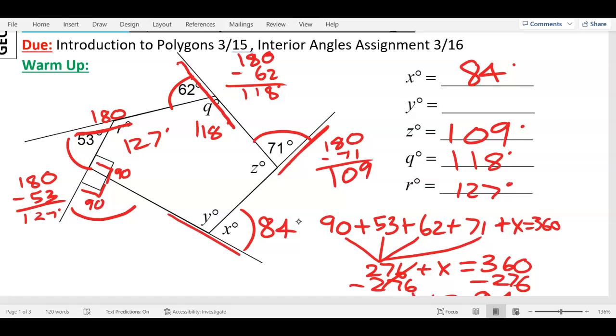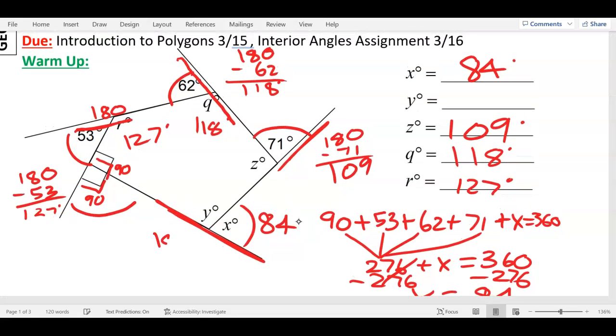And then can you use that 84 to figure out Y, if it's a straight line? 180 minus 84 is what? 96. There you go. So Y is 96. Cool.